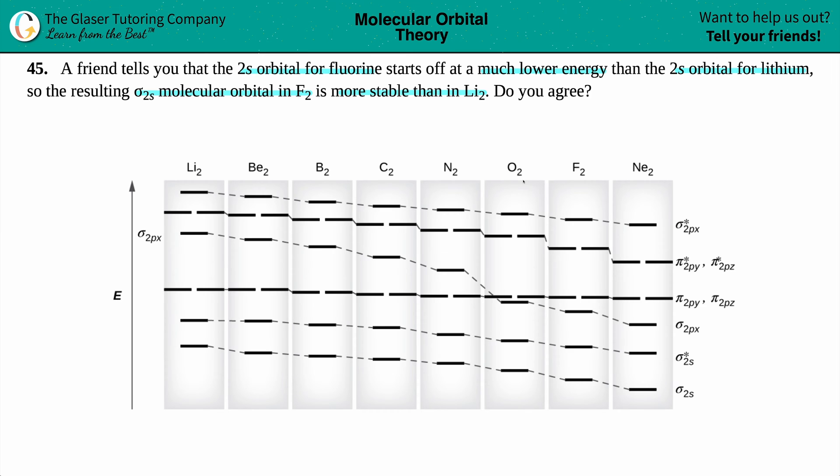Well, in order to answer this question, I basically pulled up a representation of what your molecular orbitals look like in terms of energy for all of your group 2 atoms, and just know that this is going from increasing energy. So the orbitals, the molecular orbitals that are down here have the least energy, and the ones that are at the top have the most energy for the specific atom, or molecule in this case.